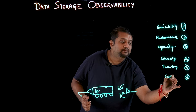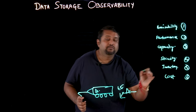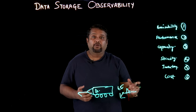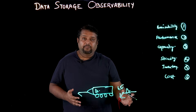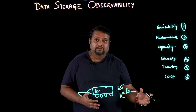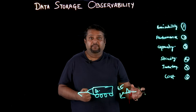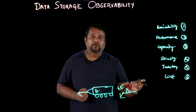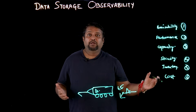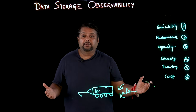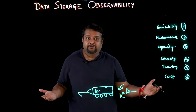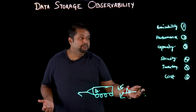The sixth pillar is cost. What is the current cost I am paying for my storage infrastructure? How much is my cost going to escalate? Is my cost going to go out of limit? Only a world-class observability tool can help, and hence this is a very critical pillar.